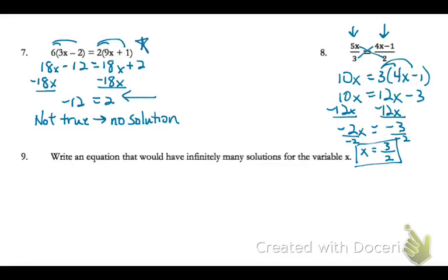Number 9 says write an equation that would have infinitely many solutions for the variable x. So to do that, we want to have sides that are equal to each other.